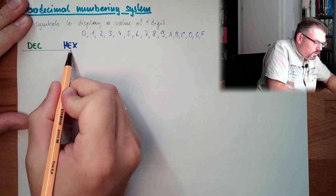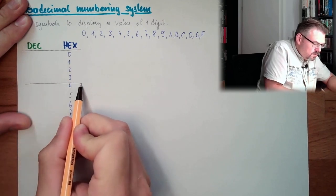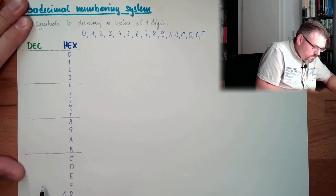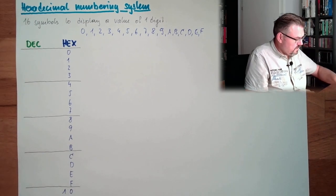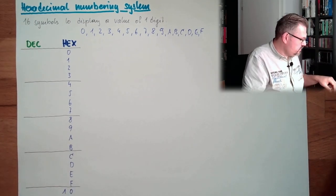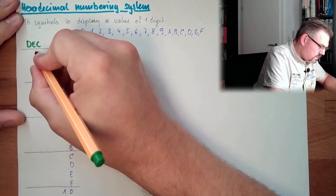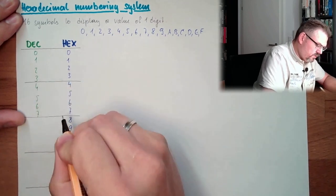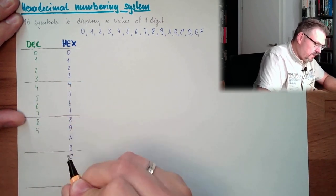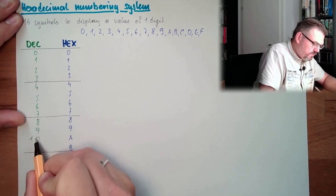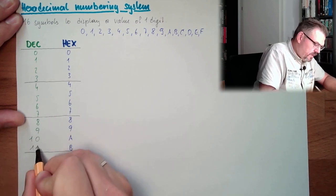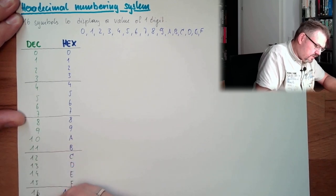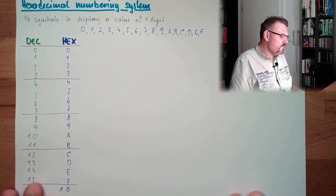Decimal representation then, this would be 0, 1, 2, 3, 4, 5, 6, 7, still the same, 8, 9, and now we are over in decimal system, so I already make 10, 11, 12, 13, 14, 15, 16, and so on. That's the representation.